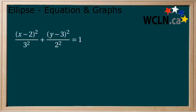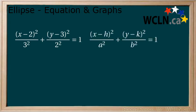Here is an equation of an ellipse. From this, we will determine the origin and graph the ellipse. First, if we compare this to our standard form of the equation, we see that h and k are 2 and 3, which means that the origin is at x equals 2 and y equals 3.